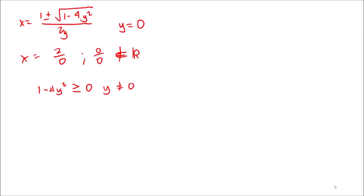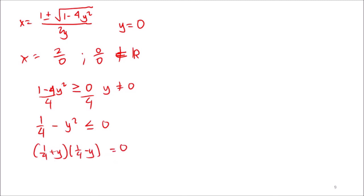Solving 1 - 4y² ≥ 0: dividing both sides by 4 gives ¼ - y² ≥ 0, which factors as (½ + y)(½ - y) ≥ 0. This gives y ≥ -½ and y ≤ ½.